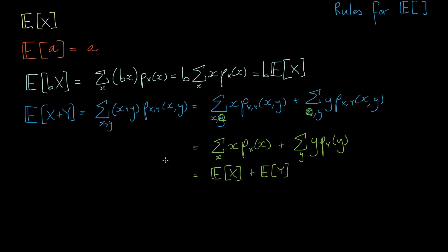So we have this neat result: the expectation of a sum of random variables is just the sum of the expectations of those two random variables. This makes intuitive sense: if I roll two dice x and y, and ask for the average of the sum of their face values, it's just the sum of the average face values of each individual die.